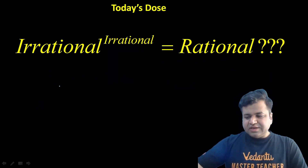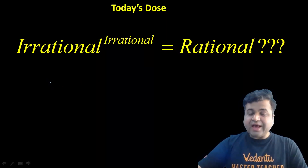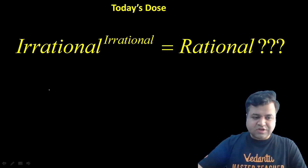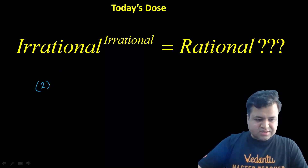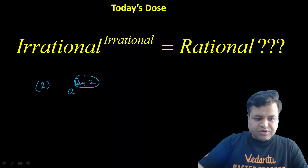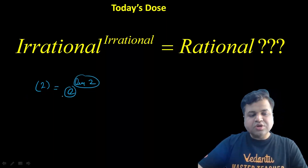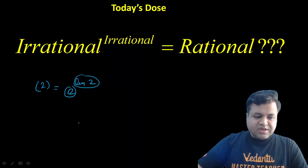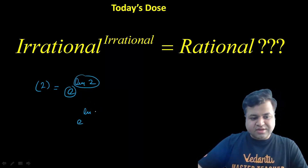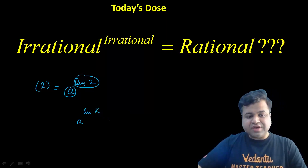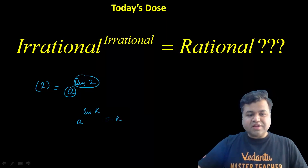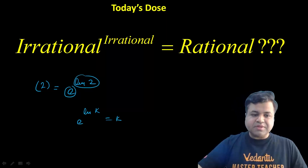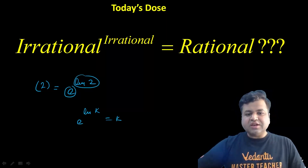One student, who is in 11th grade, had good knowledge of logarithms and exponential functions. He simply said: 2 raised to power log₂(e) raised to power ln(2). Clearly ln(2) is irrational and e is also irrational, but the result is 2, which is clearly rational. More generally, e^(ln k) equals k for any rational number k. So practically, irrational power irrational can be rational, and there are many such examples.